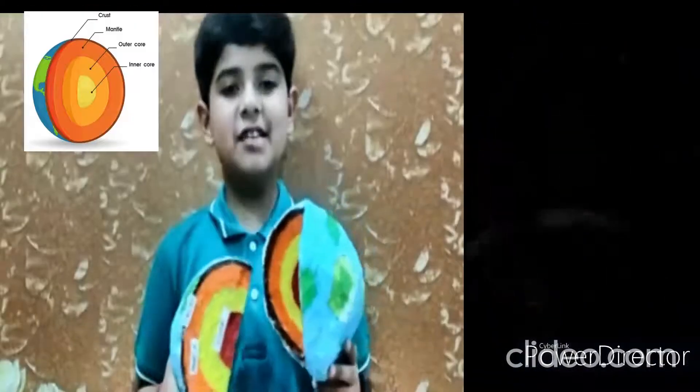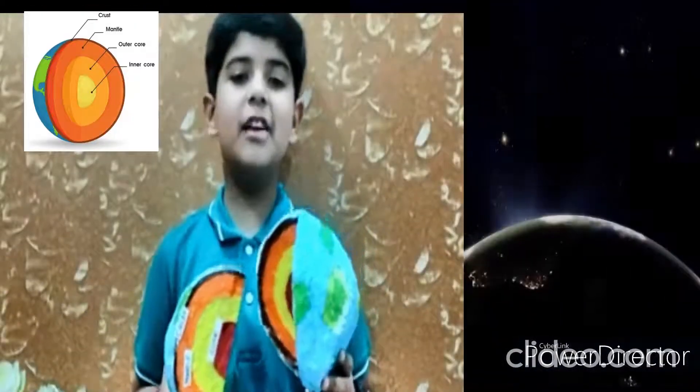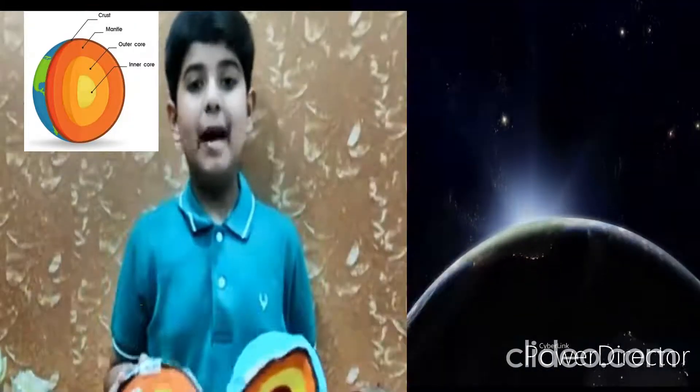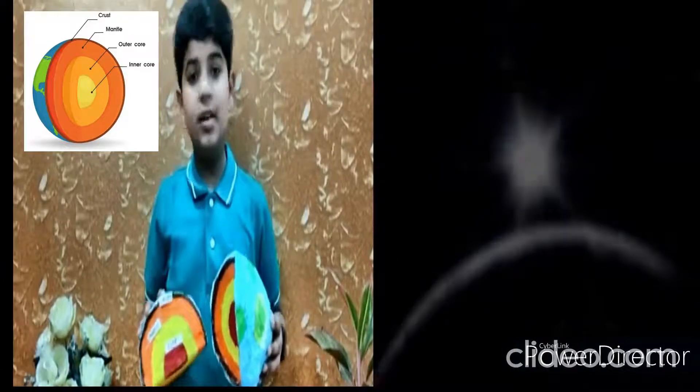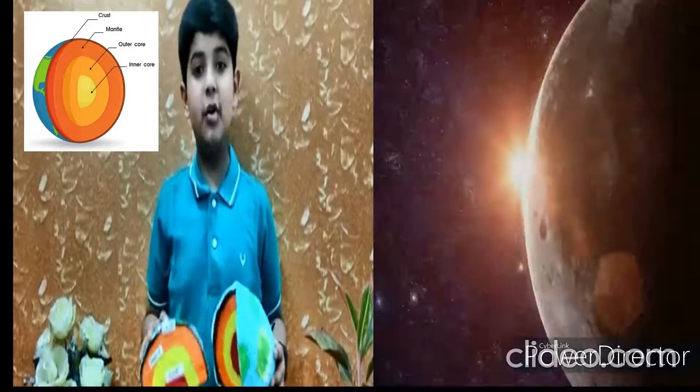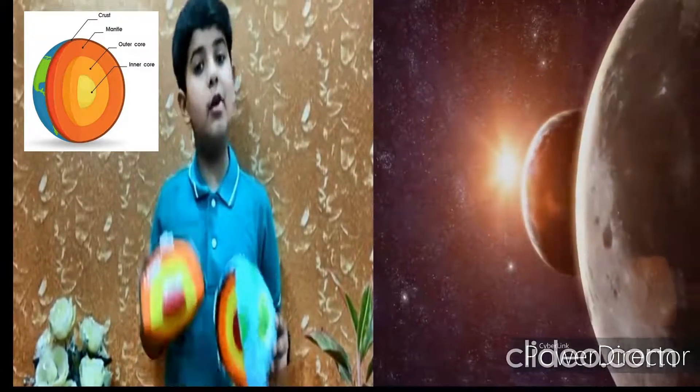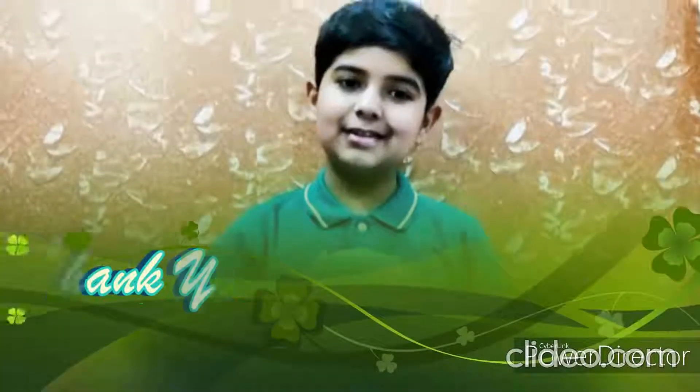Crust is the outer layer we live on. Mantle is the layer below the crust — it is very hot. The outer core is in liquid state and the inner core is in solid state. I hope you enjoyed the riddle. Thank you so much.